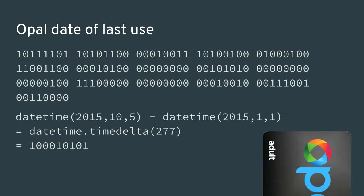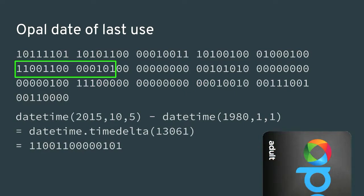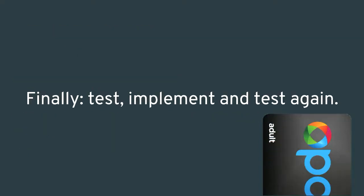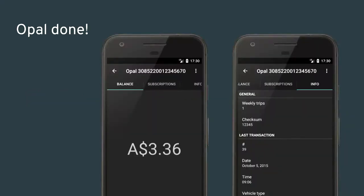For the date of last use, I first tried to see if it was the day of the year, looking for the number 277 — and found nothing. I eventually did some experimenting with different epochs and found that the correct epoch is 1st January 1980. The magical number 13,061 appears in the file. I then implemented the reader in Python, and once working, implemented it properly in Java for MetroDroid. An early mistake was handling negative balances, fixed after taking a snapshot of a card with a negative balance.